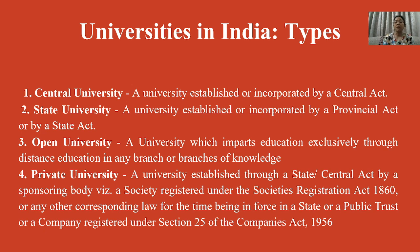The distinction for a private university is that it is established by a State or Central Act, but it is sponsored by a body — either registered under the Societies Registration Act of 1860, or a company registered under the Companies Act of 1956. If it is sponsored by such a society or company, then it is classified as a private university.